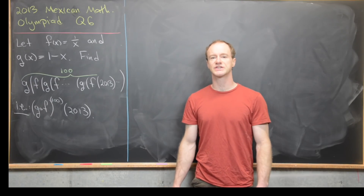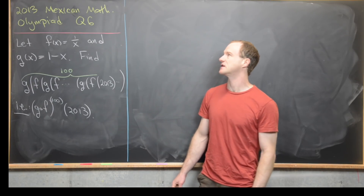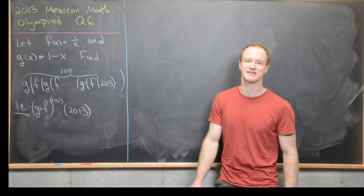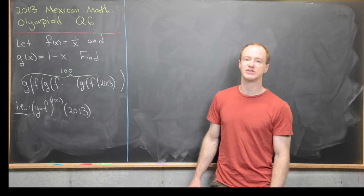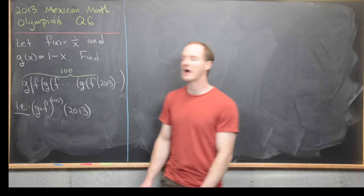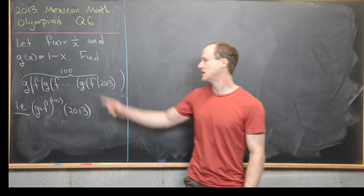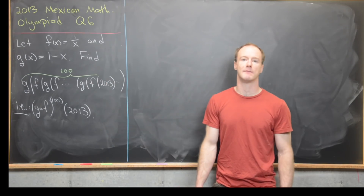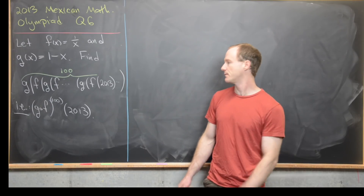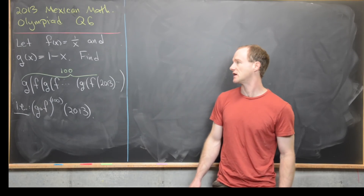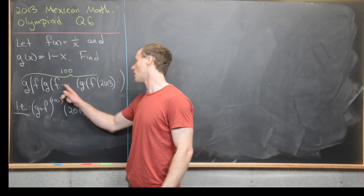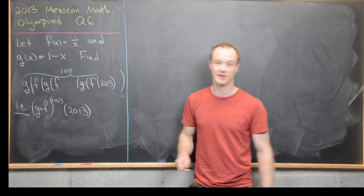Here we're going to look at a viewer-suggested question from the 2013 Mexican Mathematical Olympiad — question 6. We want to define two functions: f(x) = 1/x and g(x) = 1 - x. Our goal is to find the big composition g∘f∘g∘f∘...∘g∘f evaluated at 2013.